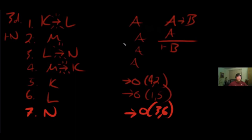Now we're going to combine our skills — translation with deductive proofs together. What we're going to do is translate arguments into formal notation and then solve for the conclusion. These are logical proofs, similar to what you may have seen in geometry.